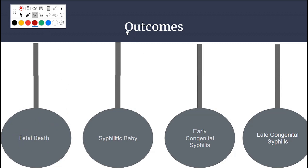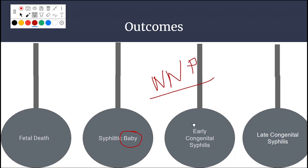The second outcome is a syphilitic baby — the baby shows signs of syphilis after birth. The third outcome is early congenital syphilis: the baby appears normal at birth but develops signs of syphilis during the first few weeks of life, that is, during the neonatal period.